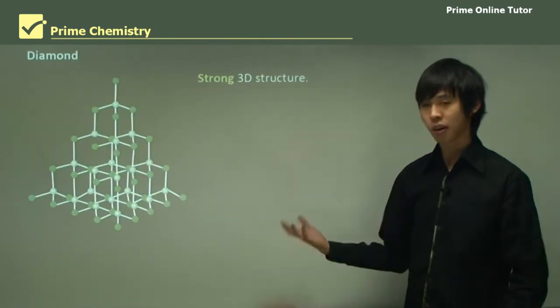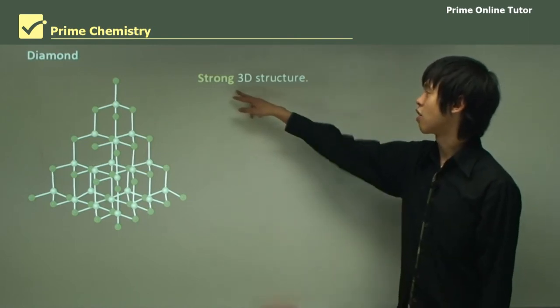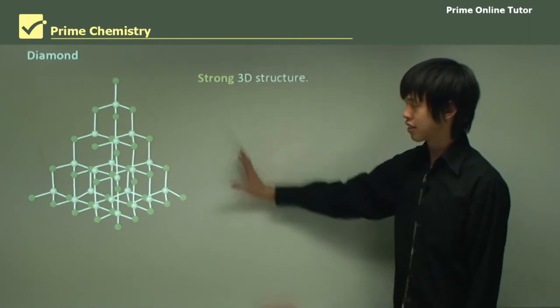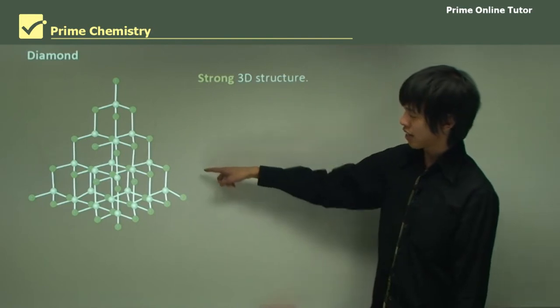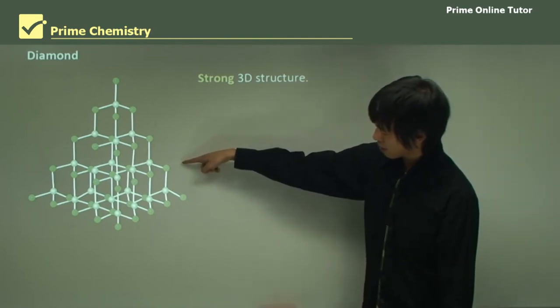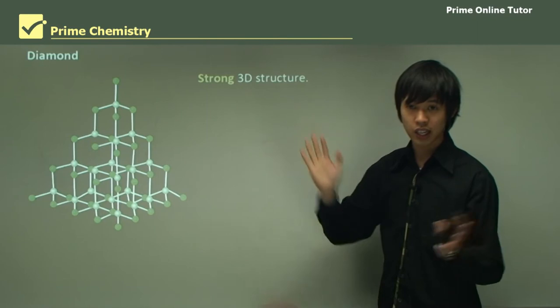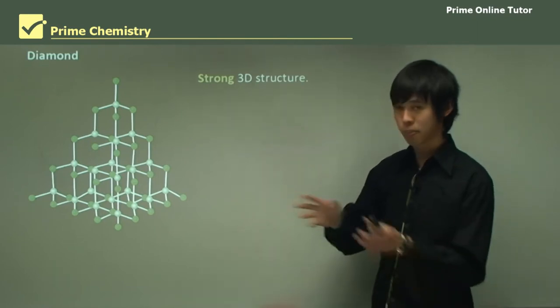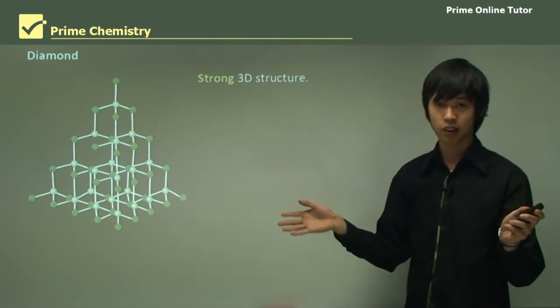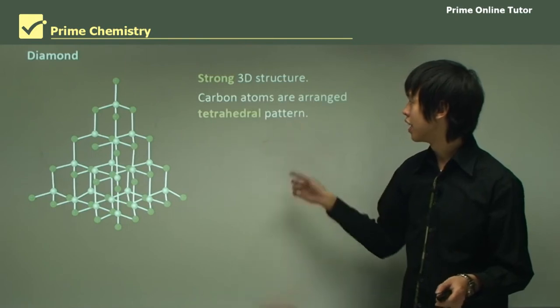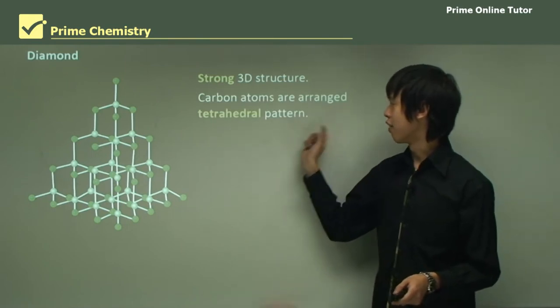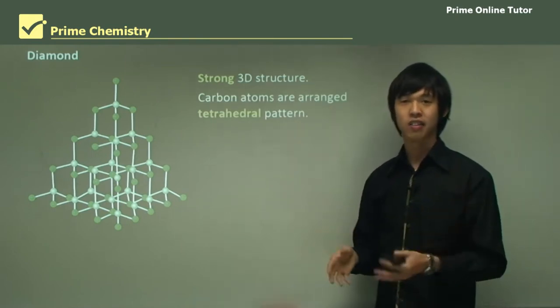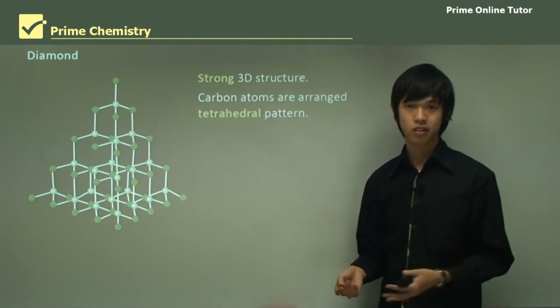So let's talk about diamonds first. It's a strong 3D structure. Here we have a 3D structure and as you can see, each carbon is bonded to four other carbons in four directions. They're bonded to four separate carbons. These carbons are arranged in tetrahedrons and what that does is it creates a very, very strong structure.